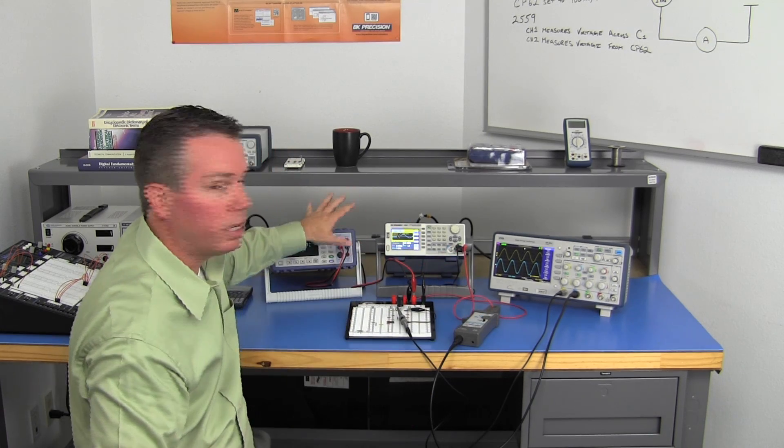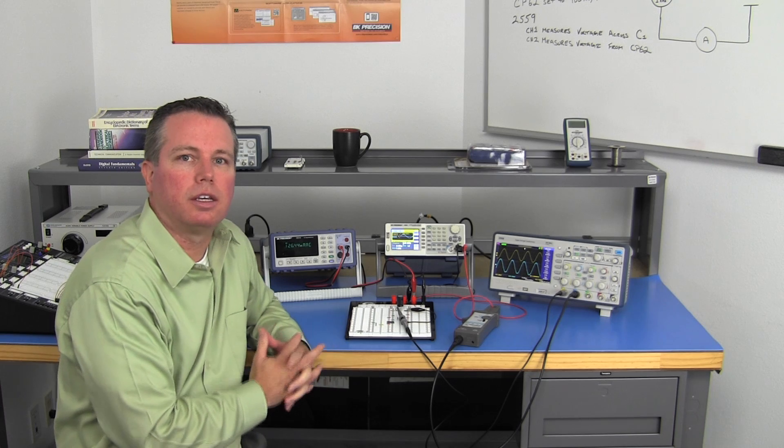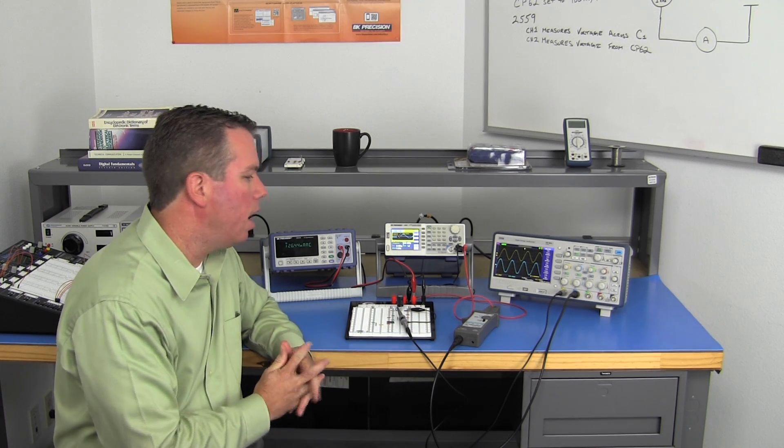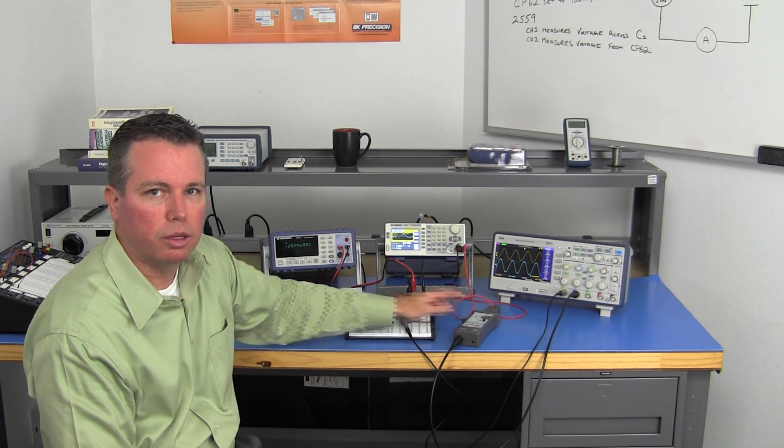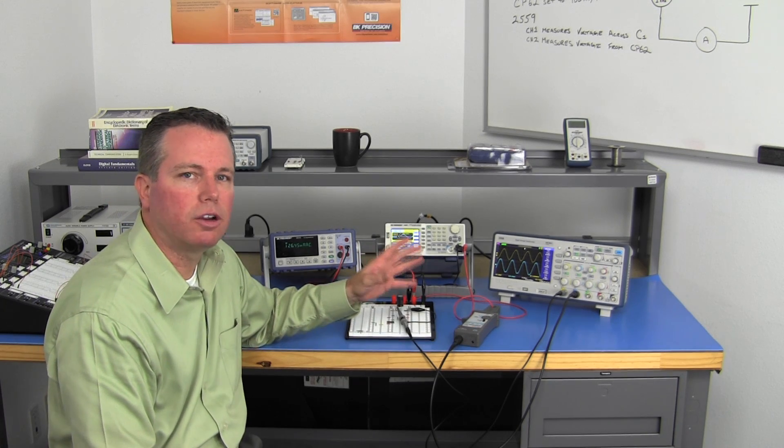With a bench multimeter, you actually need to put it in series and break the circuit to make your measurement. Another benefit of using a probe is that you not only are able to measure the current value like you would with a meter, but you can also see the current waveform.